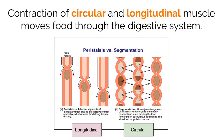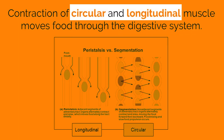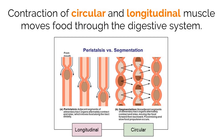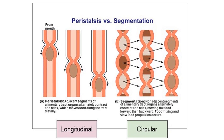We just discussed where food goes when we swallow it, so now let's discuss how it actually moves. Gravity alone won't move food down our complex digestive system, so we have two different types of muscle in place to make sure that food only moves in one direction. The first type of movement is called peristalsis, which is done by longitudinal muscle. This muscle moves in a wave-like motion that pushes food down the digestive system.